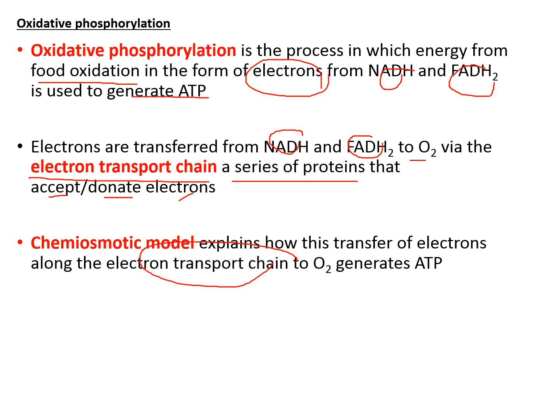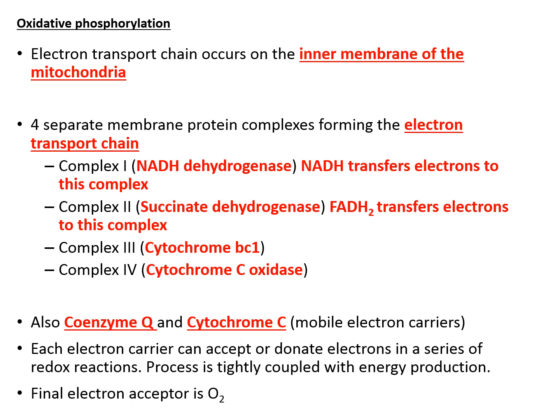According to the chemiosmotic model, it is from the flow of electrons within this electron transport chain that you have a mechanism to produce ATP. Oxidative phosphorylation is a redox reaction that occurs in the inner membrane of the mitochondria. The structure that allows this reaction to occur is known as the electron transport chain — it is called a chain because you get a series of protein complexes.